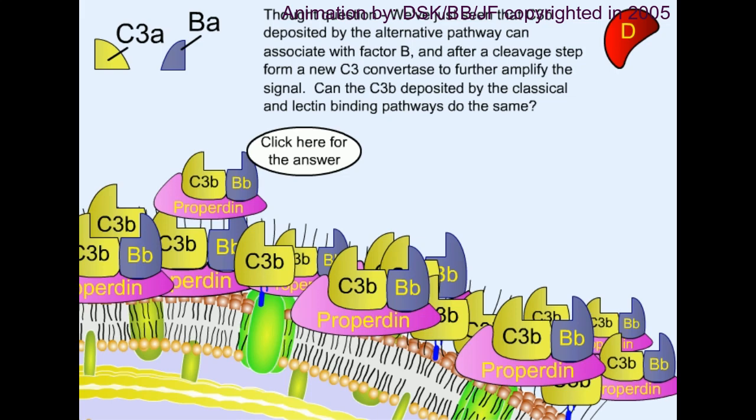This C3b-Bb will act as a C3 convertase. Once C3b is developed, that C3b can cleave C5 into C5a and C5b. Once it forms C5b, it is attached to the membrane. C5a will be diffused. Then the rest of the process will be the activation of the membrane attack complex, the same part of the classical pathway.